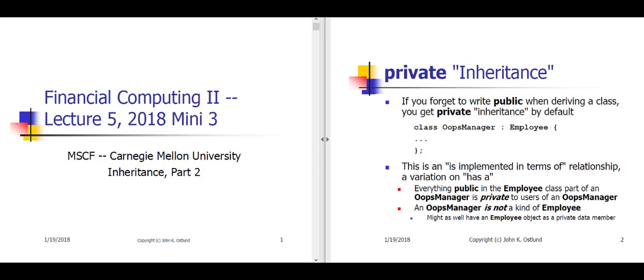First of all, on slide two, notice that we've declared this class oopsManager colon employee, to indicate that oopsManager is derived from the employee class. Now, either we forgot to say public in front of employee, or we intentionally left it out, and so what we get here is what's called private inheritance.